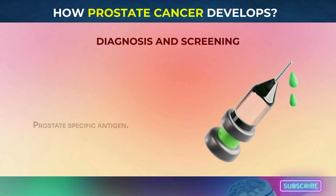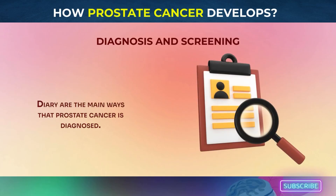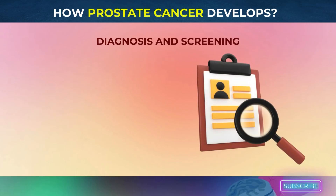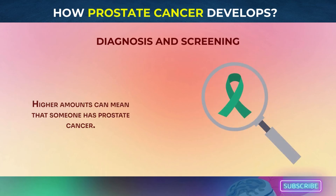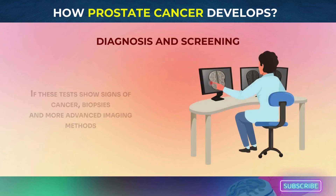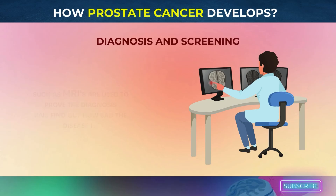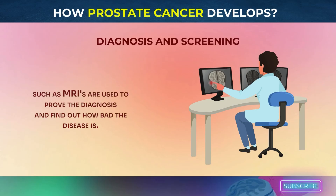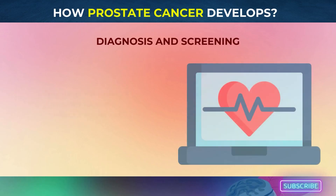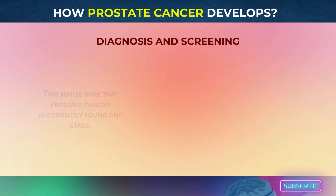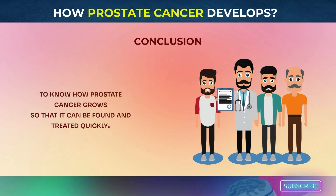Diagnosis and screening: prostate-specific antigen, PSA tests, and digital rectal exams, DRE, are the main ways that prostate cancer is diagnosed. PSA tests check how much PSA is in the blood, and higher amounts can mean that someone has prostate cancer. A doctor feels the prostate for problems during a DRE. If these tests show signs of cancer, biopsies and more advanced imaging methods such as MRIs are used to prove the diagnosis and find out how bad the disease is. This makes sure that prostate cancer is correctly found and staged. It is very important to know how prostate cancer grows so that it can be found and treated quickly.